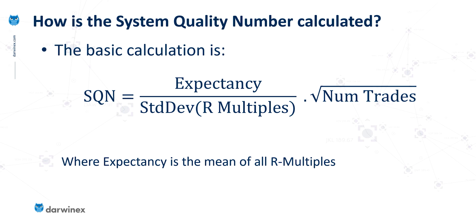The basic form of the calculation is relatively simple. It's simply the expectancy — the mean of all of the individual R-multiple values — divided by the standard deviation of those R-multiple values. The idea behind this is that we're not just concerned about a high expectancy; we also want to see consistency in those R-multiple values, and it's that consistency that means it will be a more usable and tradable strategy. So the higher the variance in the R-multiple values, the lower the SQN will be. The result is then multiplied by the square root of the number of trades, which penalises systems that only have a small sample size, because they are of course less statistically significant.